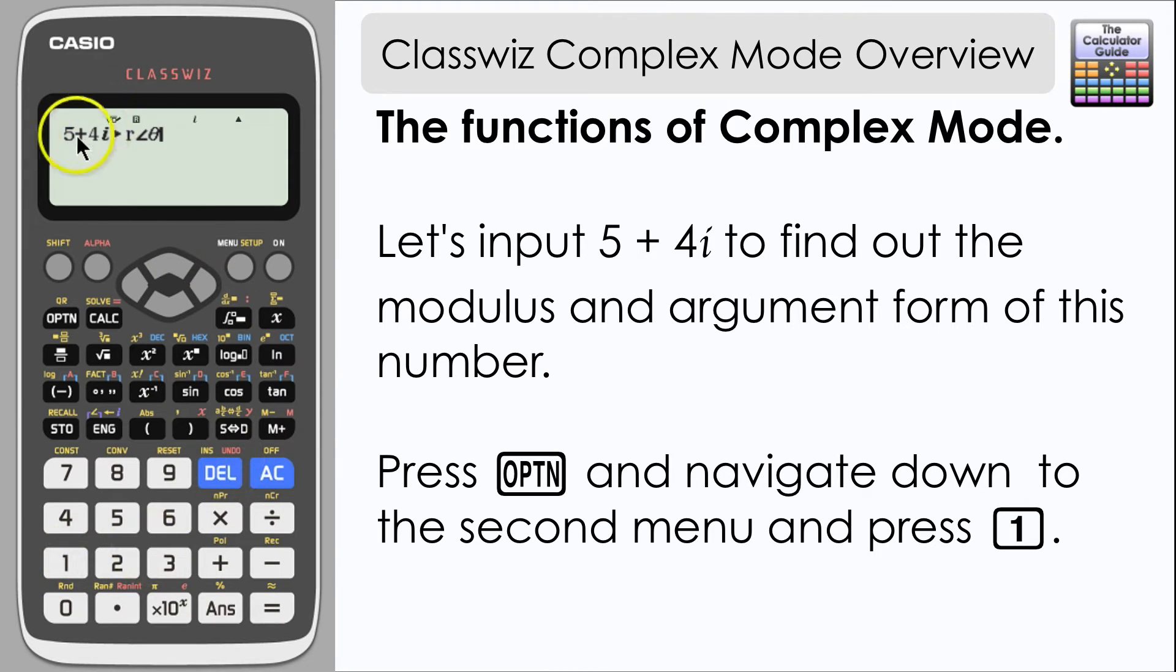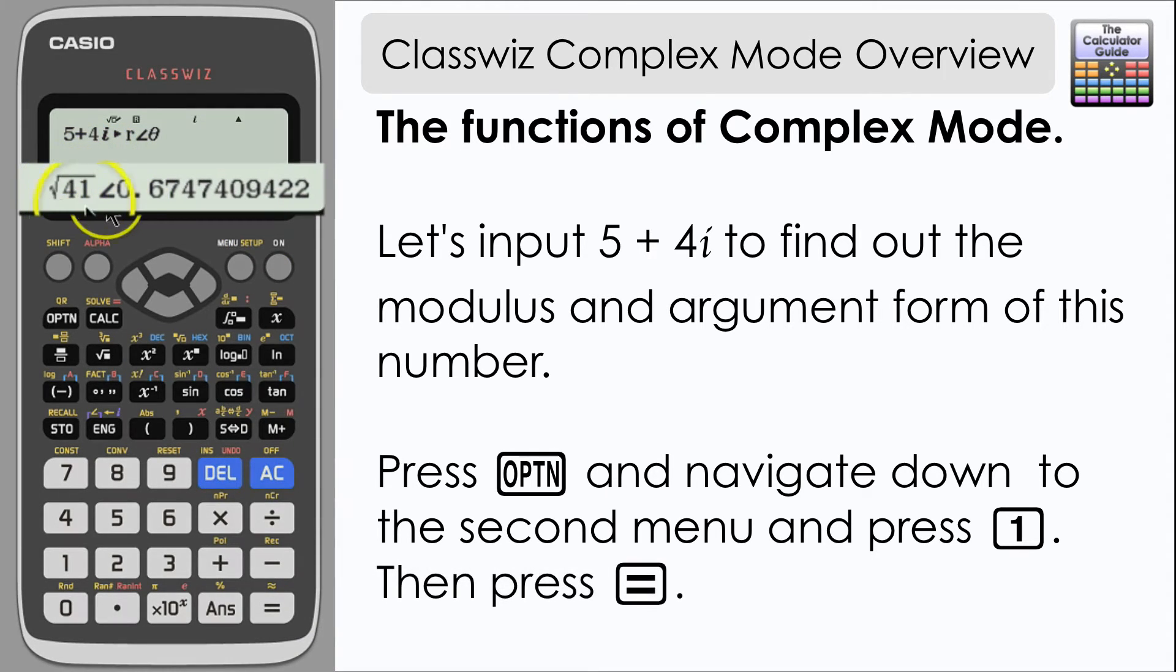And displayed after the complex number that we inputted. If we press equals, then we now have the complex number displayed in modulus-argument form. So the modulus there is square root of 41 and the argument of 0.67 to two decimal places—that is in radians.